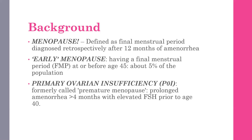Early menopause is having the final menstrual period at or before age 45, and it happens in about 5% of the population. It is a menopause but occurs a bit early, and usually it is a normal phenomenon as well.